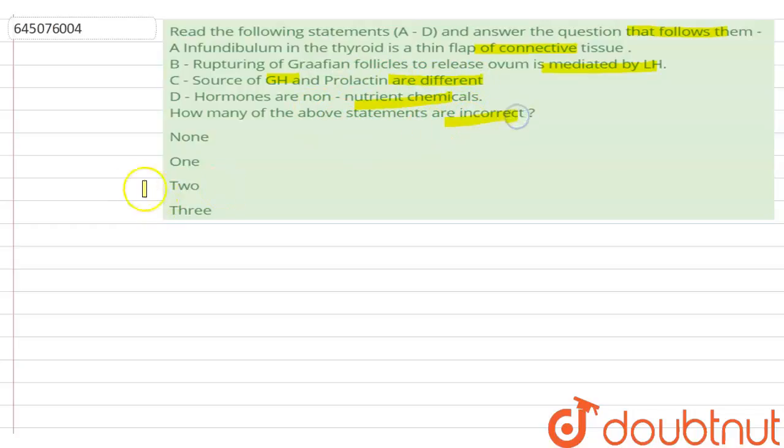So the first statement is: Infundibulum in the thyroid is a thin flap of connective tissue. This is the incorrect statement, because both the lobes of the thyroid glands are interconnected with a thin flap of connective tissue that is called as isthmus, not the infundibulum.